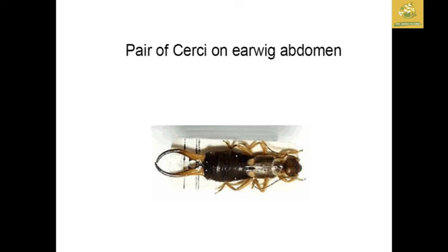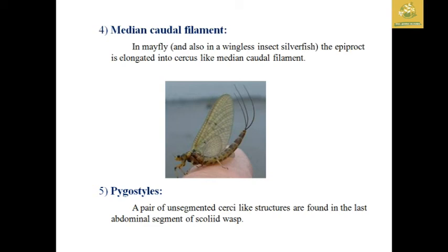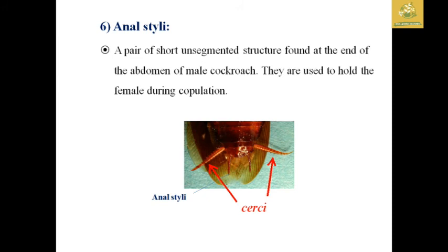The earwig cerci are used for defense and prey capture. The median caudal filament is found in mayflies, wingless silverfish, and wingless silk insects — they have an elongated caudal filament used for respiration. The pygostyli is an unsegmented, setae-like structure found in the abdominal segment of scelionid wasps. The anal styli are unsegmented styli found on the abdomen of male cockroaches.